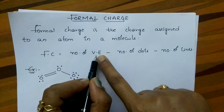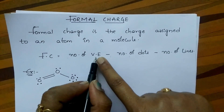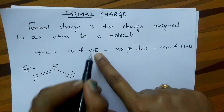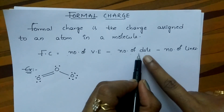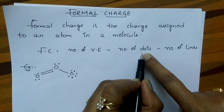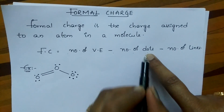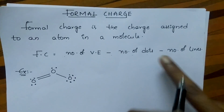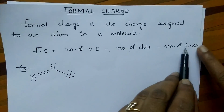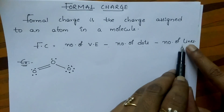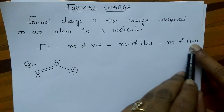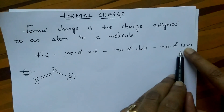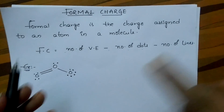Number of valency electrons we can find by using its group number. Number of dots is nothing but number of lone pair of electrons. Number of lines is nothing but number of bonds which is surrounded by an atom.